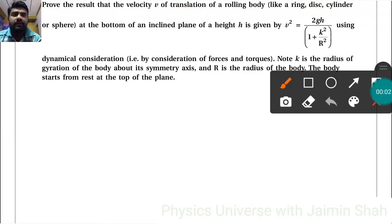The question is to prove the result that the velocity v of translation of a rolling body like a ring, disc, cylinder, or sphere at the bottom of an inclined plane of height h is given by v² = 2gh/(1 + k²/r²) using dynamical consideration. Note k is the radius of gyration of the body about its symmetry axis and r is the radius of the body. The body starts from rest at the top of the plane.